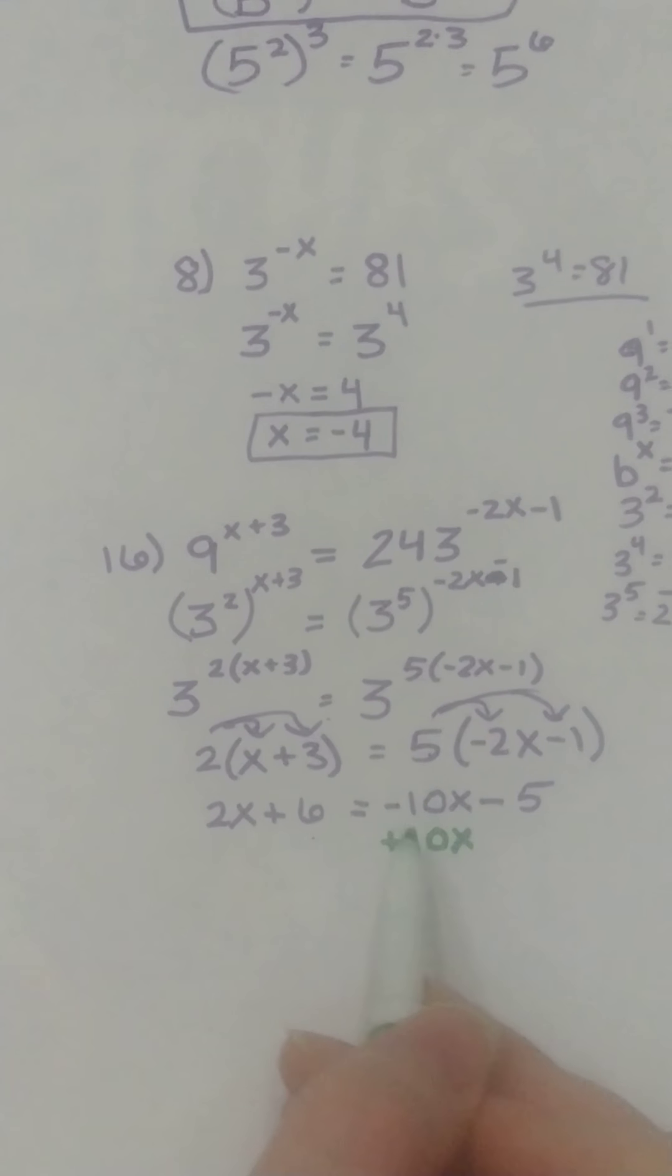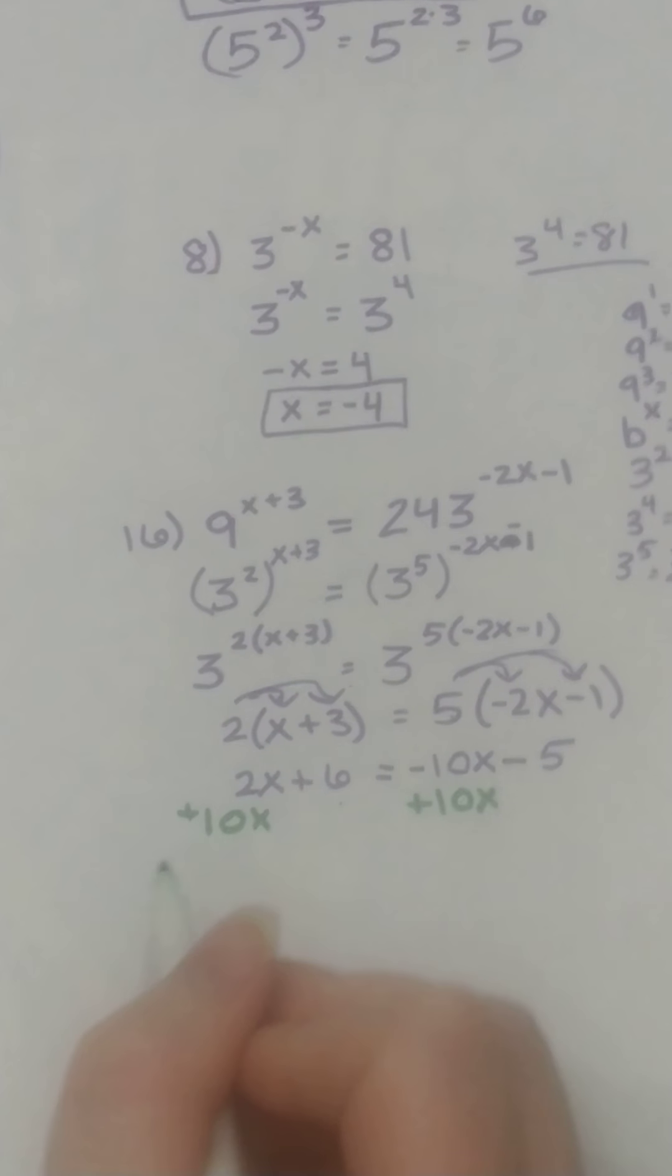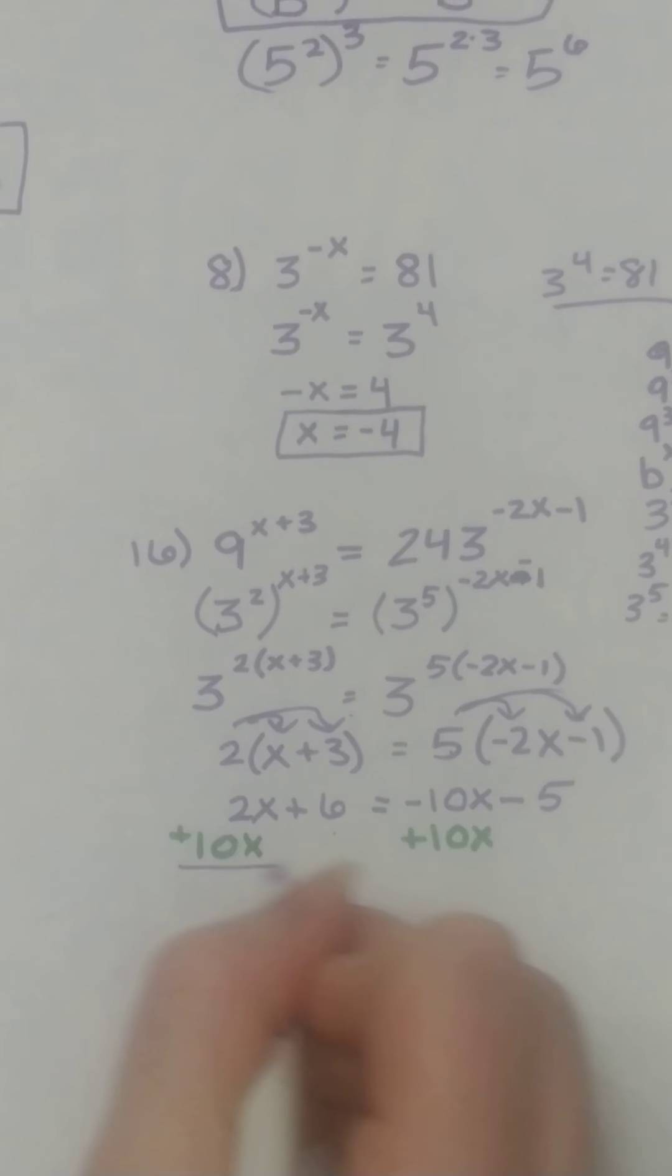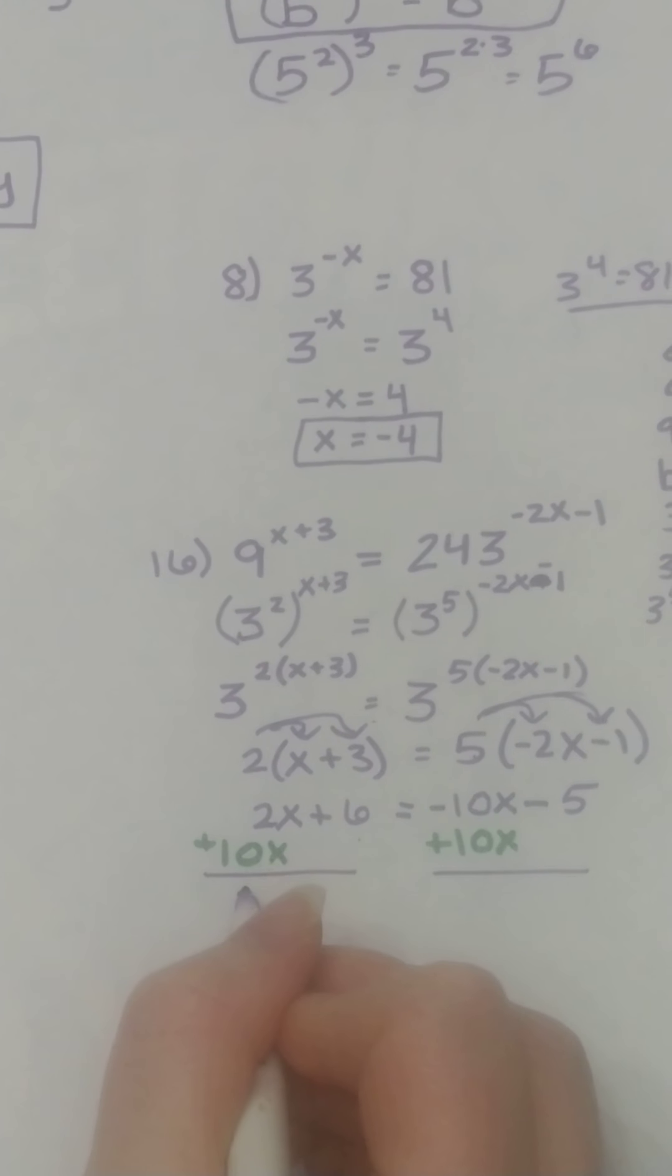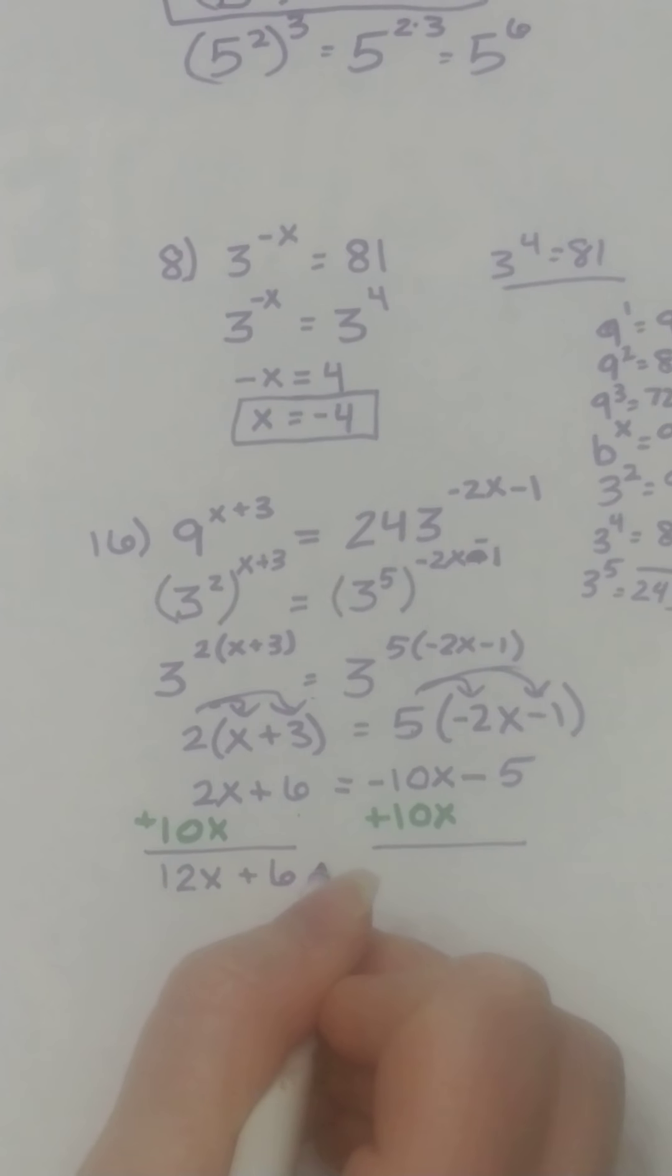So if I did that here I got to do it on the other side. Okay, so 2x plus 10x is 12x. Still have the plus 6.